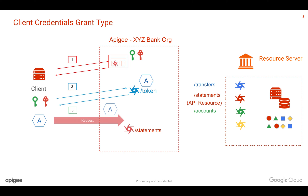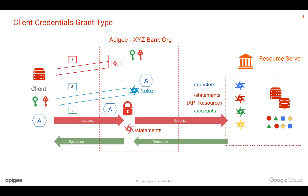The client now uses this token to make a request to access the slash statements API. Apigee verifies whether it's a valid token and then gives access to the backend server, which sends the response back to the client. The important concept here in the client credentials grant type is that the access token is short-lived. Even if it is compromised, the attacker gets access only to the slash statements API for a limited amount of time. Apigee here plays the role of authorization server.